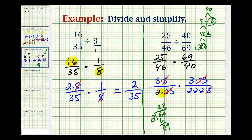So now we can multiply and know that this product will be in simplest form. Our numerator is going to be 5 times 3, that's 15. Our denominator is going to be 2 times 2, times 2, times 2, that's going to be 16. So our quotient is equal to 15/16.